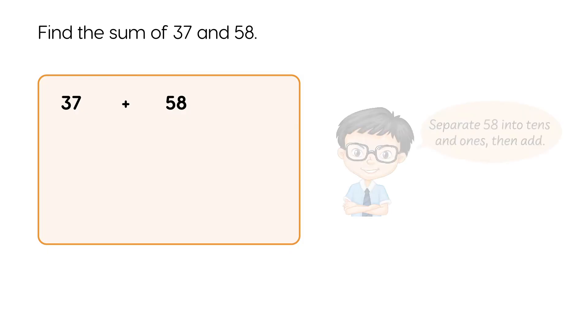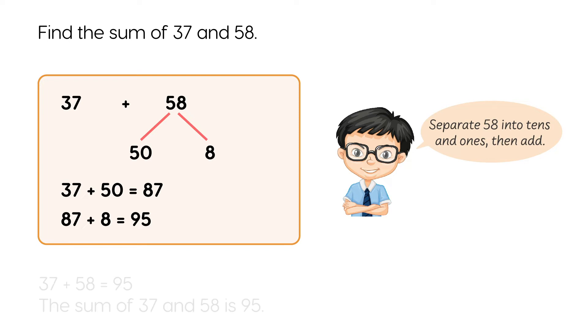Find the sum of 37 and 58. 37 plus 50 equals 87. 87 plus 8 equals 95. 37 plus 58 equals 95. The sum of 37 and 58 is 95.